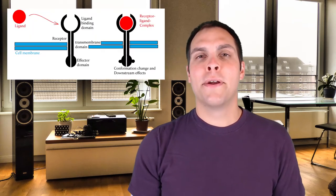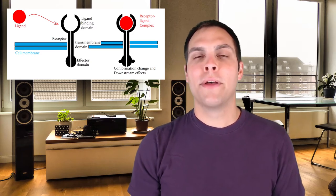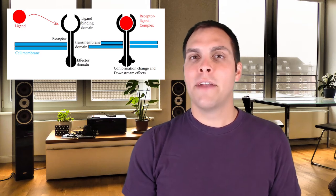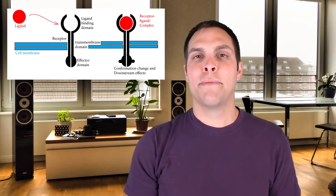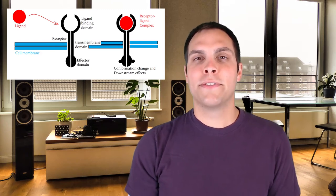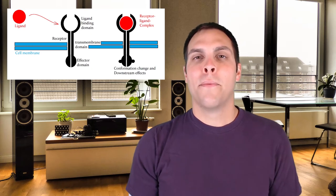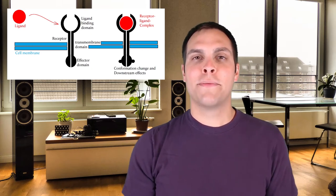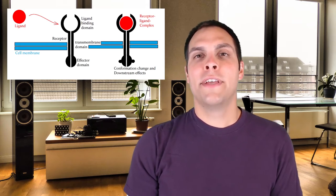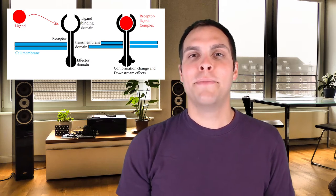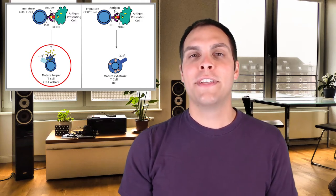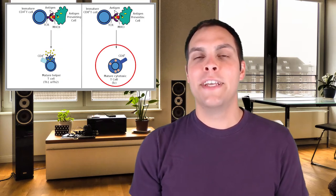All cell surface receptors have three components: an extracellular binding domain that interacts with its given ligand, a transmembrane domain, and a cytoplasmic domain. Receptors are incredibly specific — all proteins have a unique three-dimensional structure that dictates which signals a given receptor can interact with. Every cell has an entire suite of cell surface receptors, and because each cell has a unique set, they can be used as markers to identify cell type. For example, only helper T cells have a CD4 receptor, while killer T cells have a CD8 receptor at their cell surface.